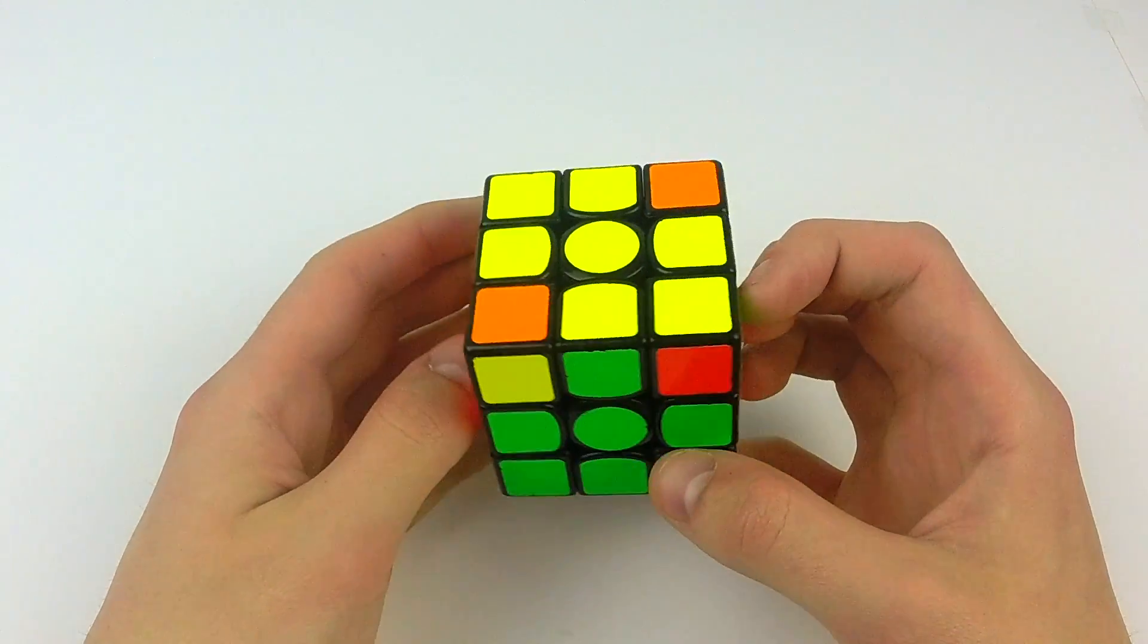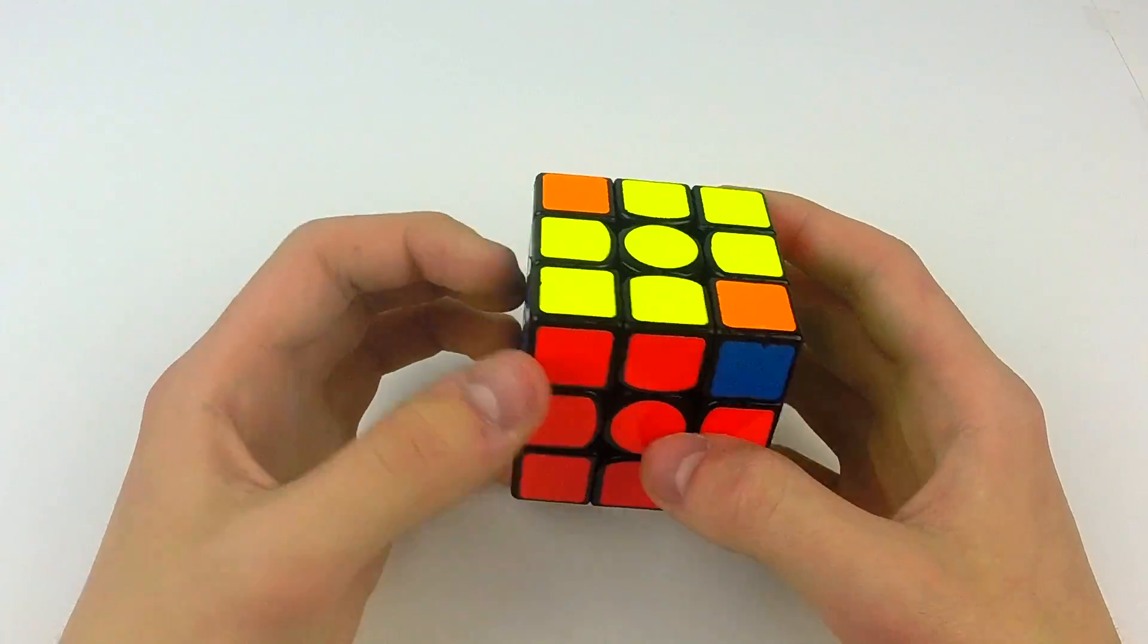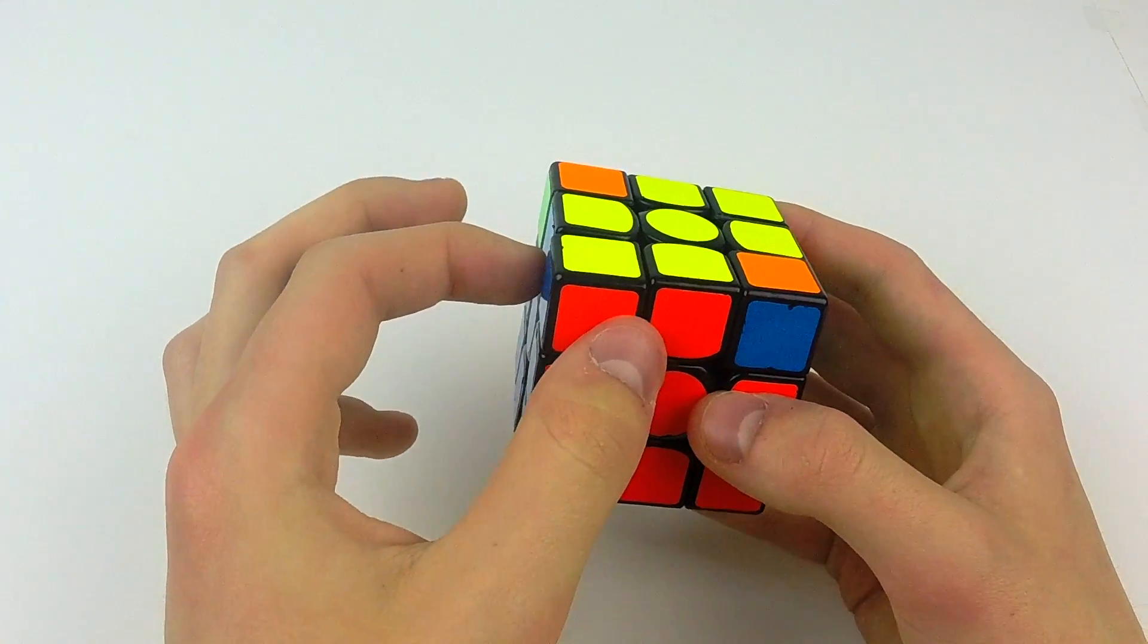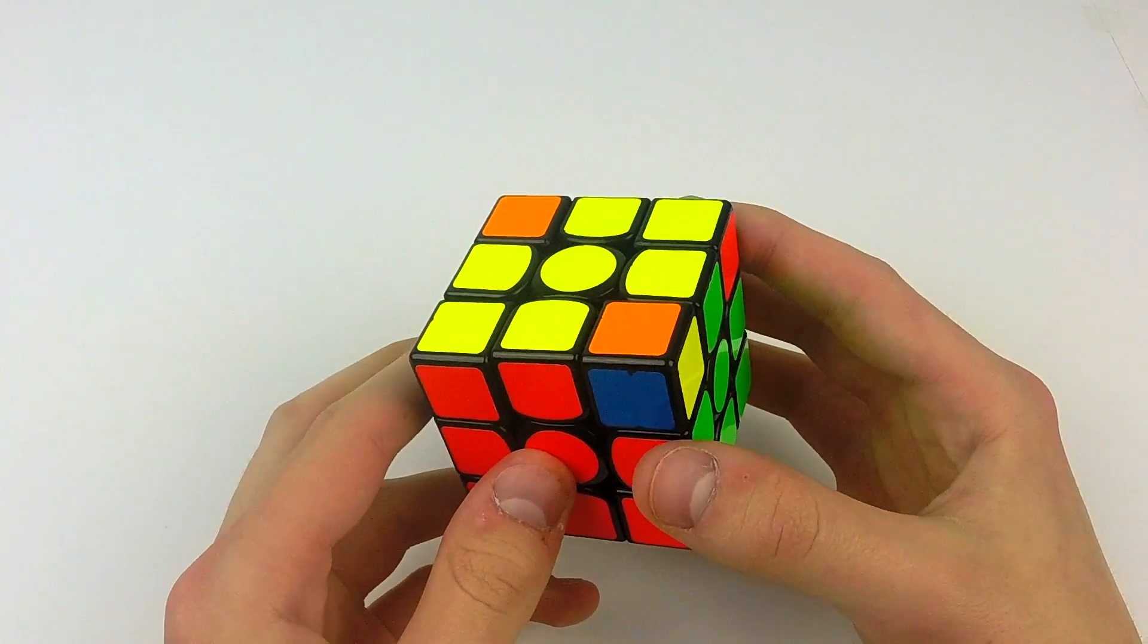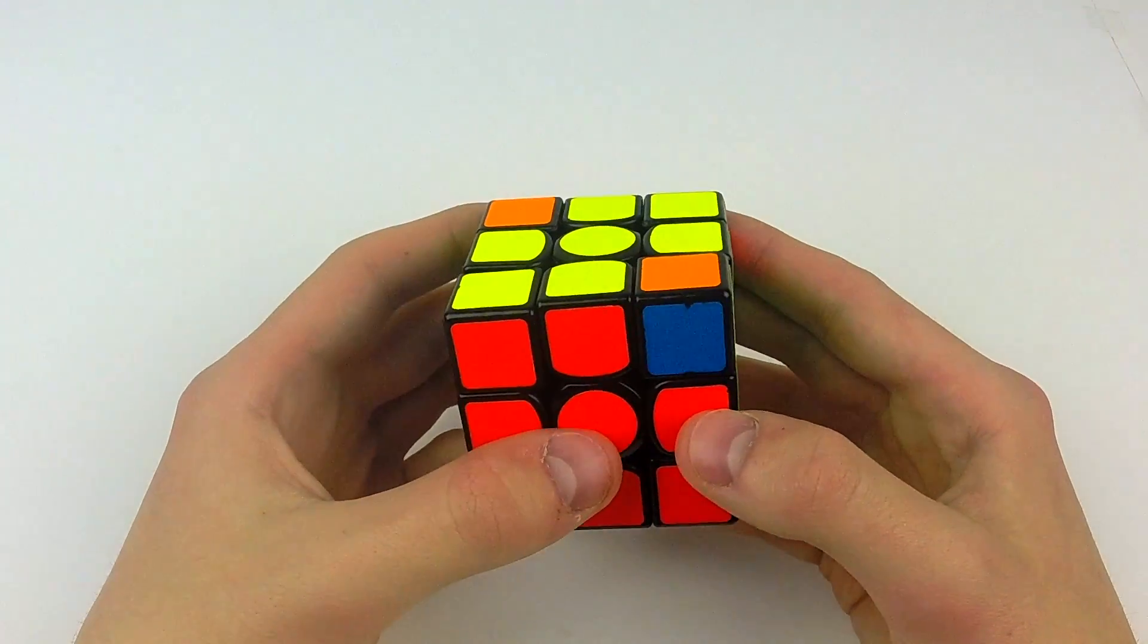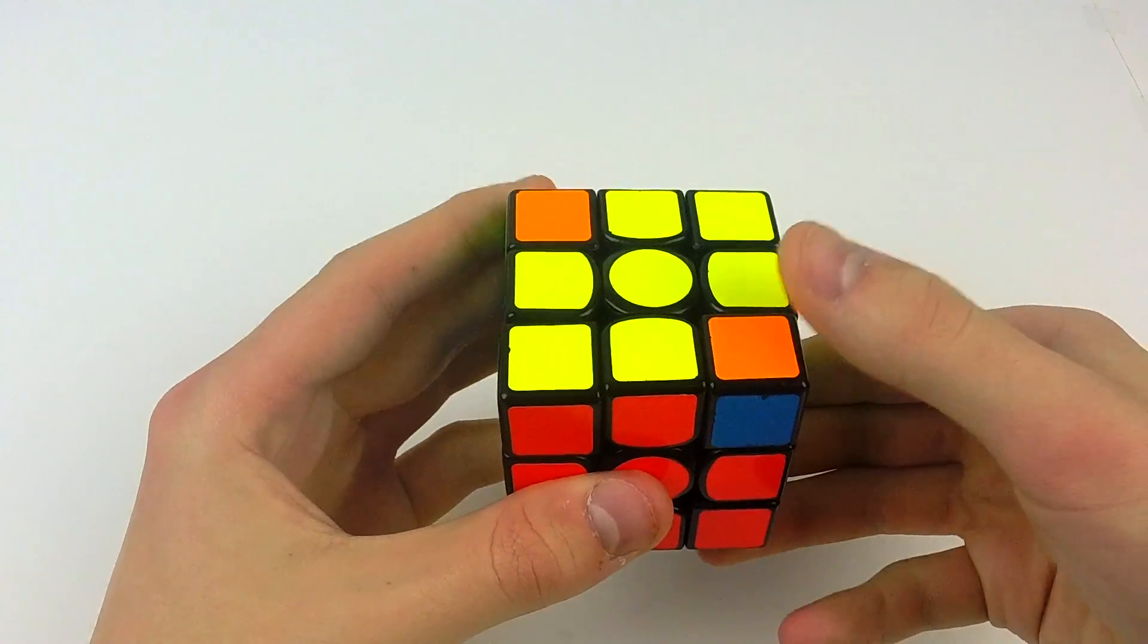Okay I'm gonna show this alg one more time and this time take note that this block on the left here is completely solved. When you see that you know that this COLL will skip PLL. So here we go again.